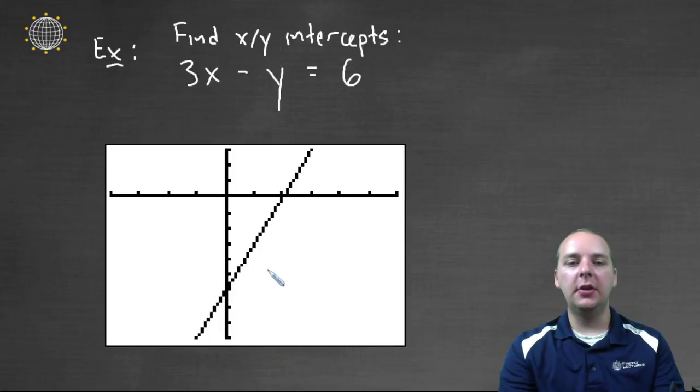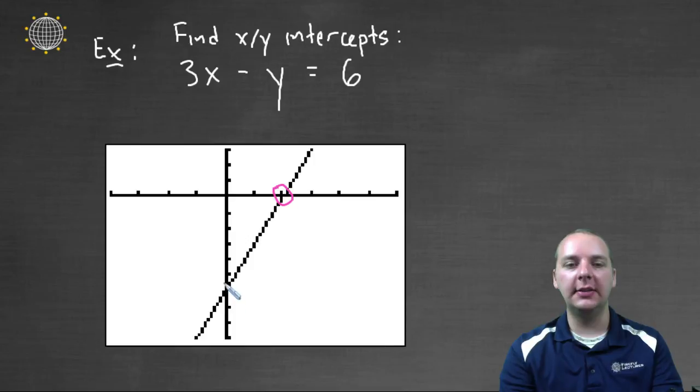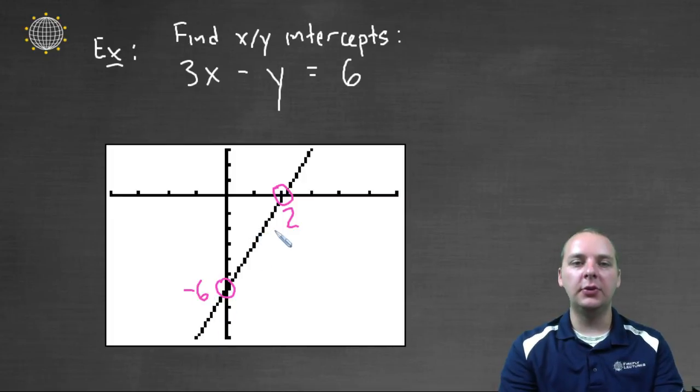Alright, now just in closing, I just want to convince you that we did do this correctly. Here's our X and Y intercept, X intercept at two, and Y intercept at negative six. And I went ahead and graphed this linear equation, and sure enough, look, we were absolutely dead on. And it was so fast to find these X and Y intercepts, but we found them most easily because the equation was written in standard form.